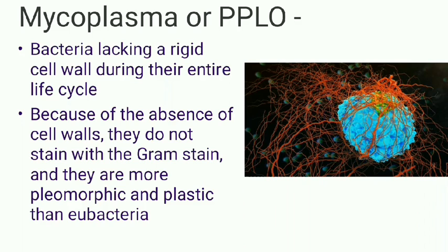These are commonly referred to as pleuropneumonia-like organisms, or PPLO. These organisms are the smallest known free-living organisms. Because of the absence of cell walls, they do not stain with the Gram stain and are more pleomorphic and plastic than true bacteria. With Giemsa stain they appear as tiny pleomorphic cocci, short rods, short spirals, and sometimes as hollow ring forms.